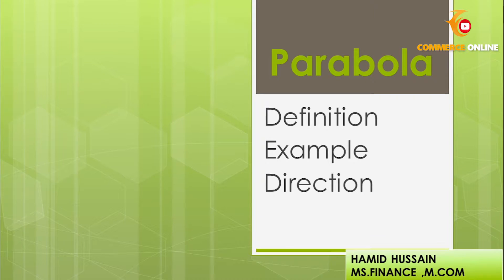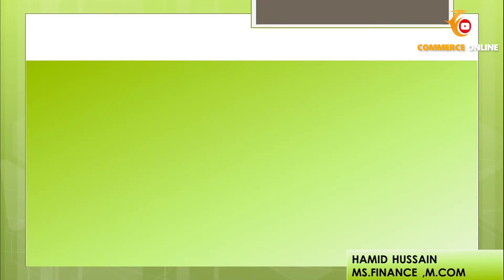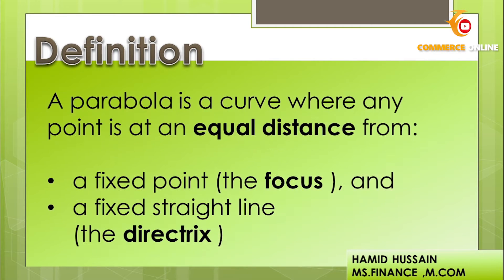What is parabola? A parabola is a curve where any point is at an equal distance from a fixed point — the focus — and a fixed straight line — the directrix. In simple words, we can say that a parabola is a U-shaped diagram. So now, what is focus and directrix?